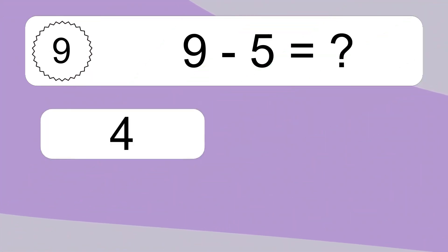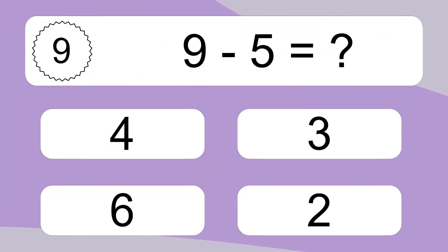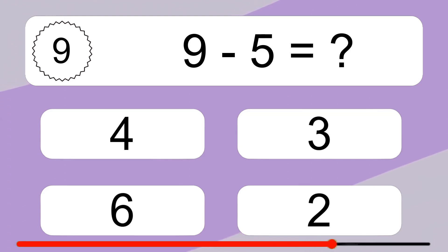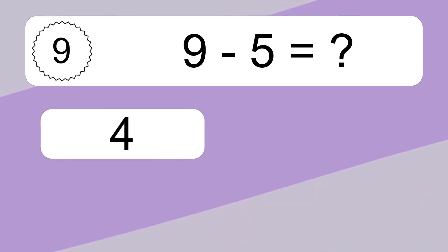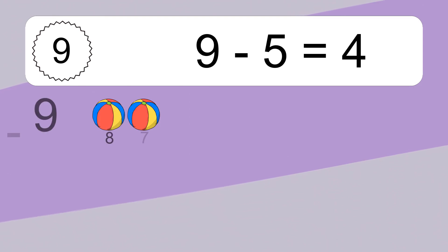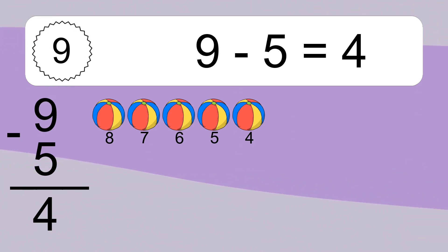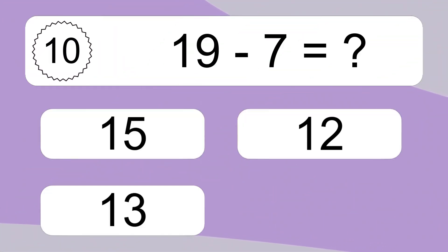19 minus 5 equals what? 19 minus 5 equals 4. Let's count it: 8, 7, 6, 5, 4.